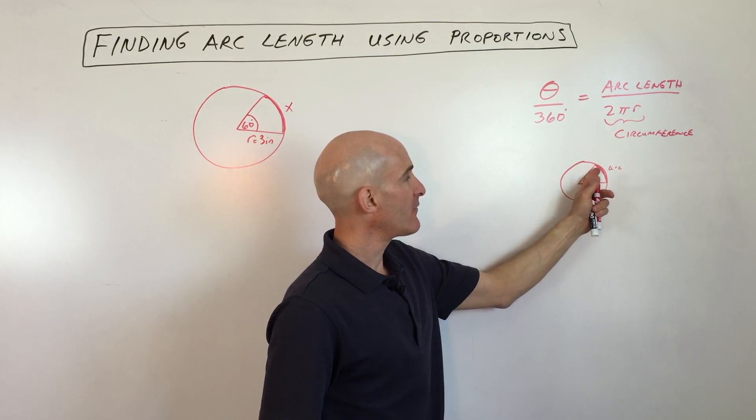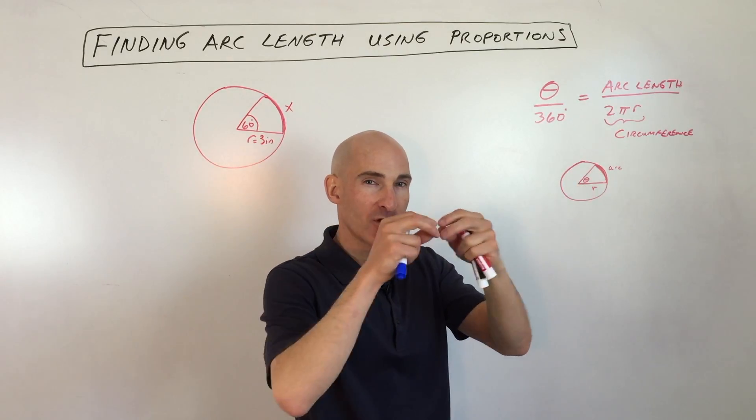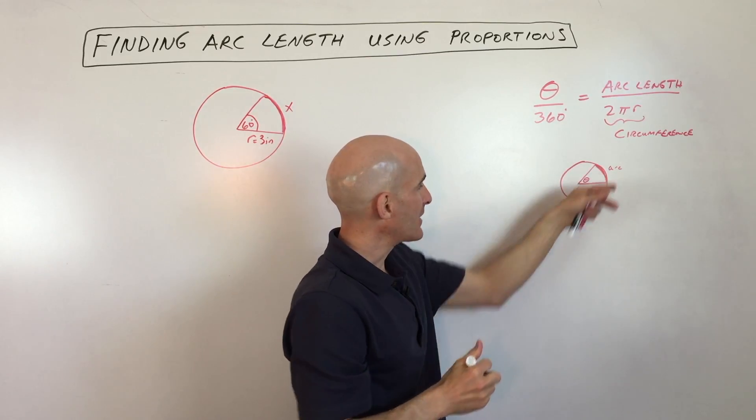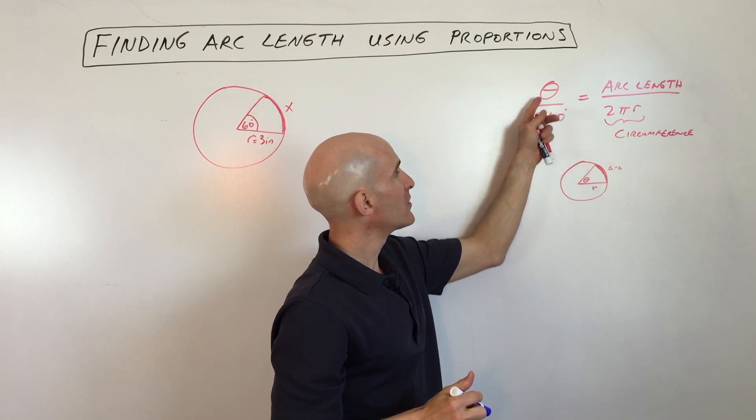When you talk about finding the arc length, we're trying to find out the length of that curve. If we were to straighten this arc out on a circle, what we're going to do is use a proportion.